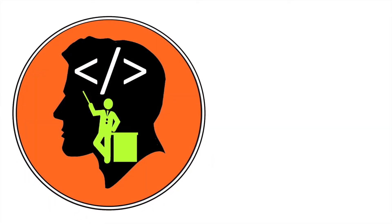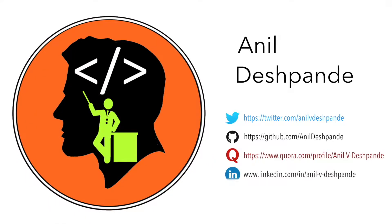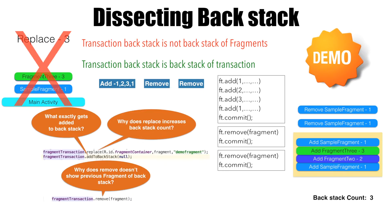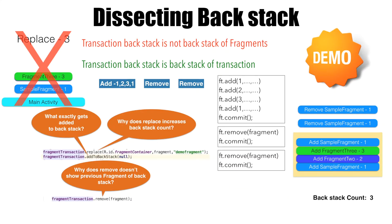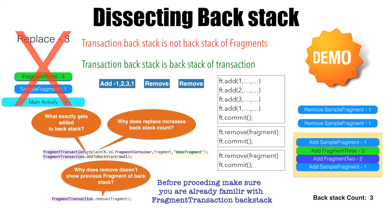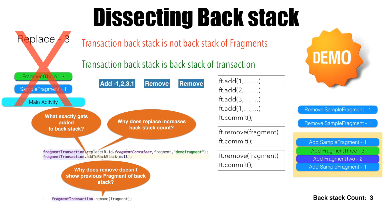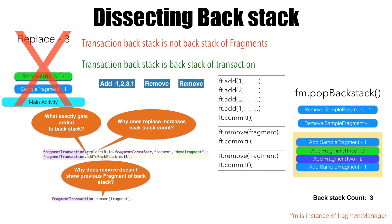Hi guys, Co-Tutor here and my name is Anil Deshpande. In the previous video we saw a scenario where each and every transaction getting committed to the transaction backstack was just increasing the backstack count again and again. We ended by saying that if we want to remove a particular entry from the transaction backstack, we will have to use the pop backstack method of the fragment manager. In this video we will go through a demo to understand how pop backstack works.